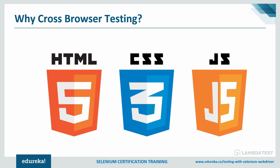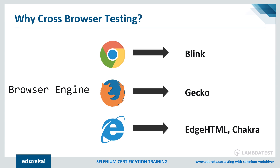A simple website is comprised of three major technologies: HTML, CSS, and JavaScript. There are hundreds of other back-end technologies like Python, Ruby, and Node, but in the front end, only these three are used for rendering. However, each browser uses a completely different rendering engine — Chrome uses Blink, Firefox uses Gecko, and Internet Explorer uses EdgeHTML and Chakra — which is why the same website renders differently across browsers.